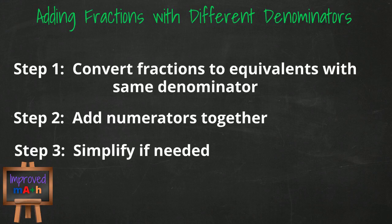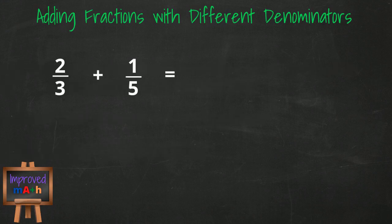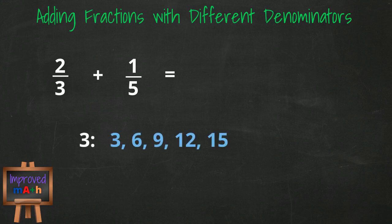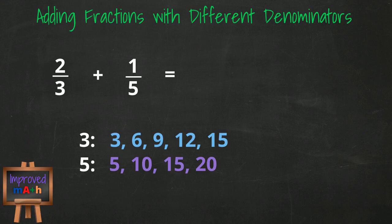Next example: 2 thirds plus 1 fifth. We have different denominators again, so let's lay out some multiples and figure out what our new equivalent fractions will be. Multiples of 3 are 3, 6, 9, 12, 15. Multiples of 5 are 5, 10, 15, and 20. Our least common multiple is going to be 15, so that becomes our new denominator.